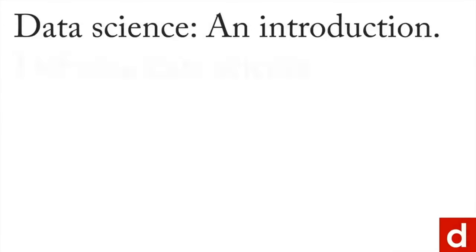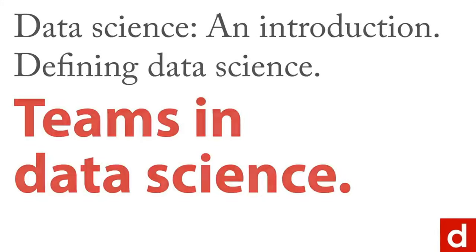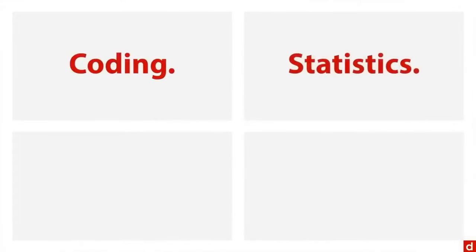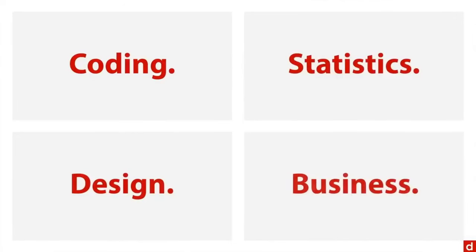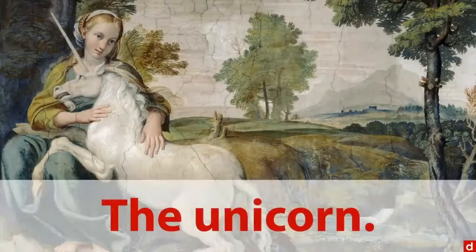The last thing I want to discuss in this introduction is teams and data science. Data science has many different tools, and different people are going to be experts in each one. You have coding, statistics, and fields like design, business, and management all involved. The question is: who can do all of it at the level needed? That's where we get the concept of the unicorn — just like in ancient history, the unicorn is a mythical creature with magical abilities.